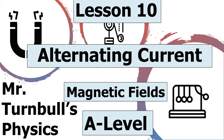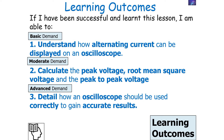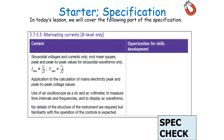Hello, and in today's lesson we're going to be looking at alternating current, which is part of the magnetic fields topic in AQA A-level physics. In today's lesson we're going to look at understanding how to analyse alternating current. If we've been successful, we should be able to understand how alternating current can be displayed on an oscilloscope, calculate the peak voltage, the root-mean-squared voltage and the peak-to-peak voltage, and detail how an oscilloscope should be used correctly to gain accurate results, which forms part of the 3.7.5.5 alternating current part of the specification.